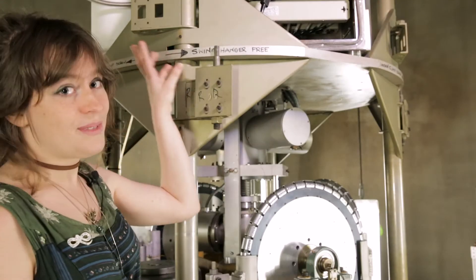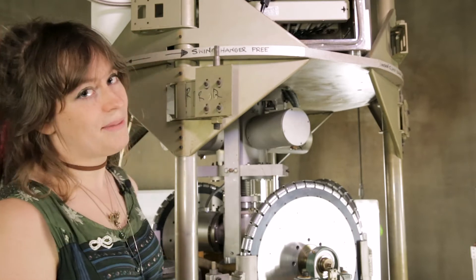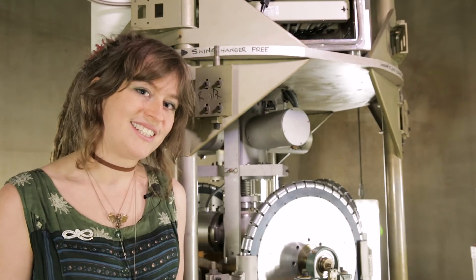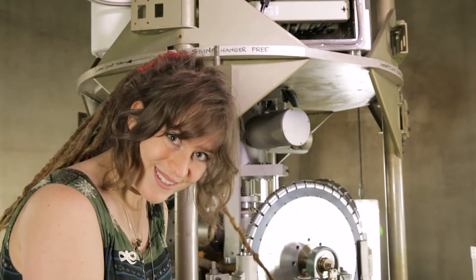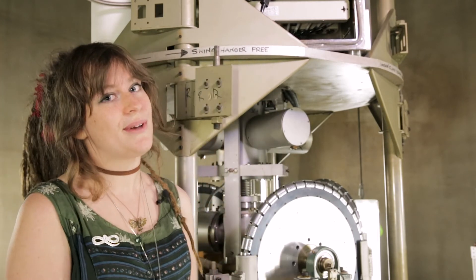Now when the negative beam comes down, it hits a carbon foil just up here, which strips the electrons off, makes it positively charged, so it's repelled from the terminal here, down towards the bottom of the tank and into the rooms where we conduct our experiments.